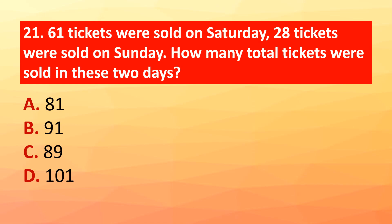Question 21: 61 tickets were sold on Saturday and 28 tickets were sold on Sunday. How many total tickets were sold in these two days? The correct answer is option C: 89.